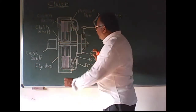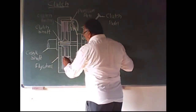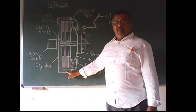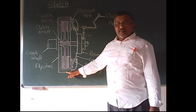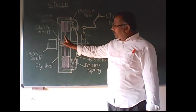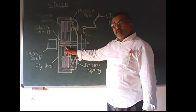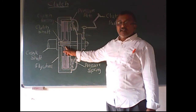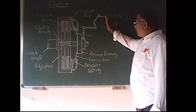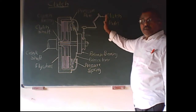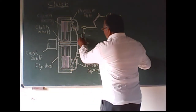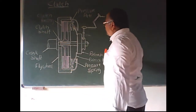The whole flywheel and pressure plate assembly is known as the driving member. The clutch plate is known as the driven member. From the release bearing to the clutch pedal — that is the operating system, or operating members of the clutch assembly.